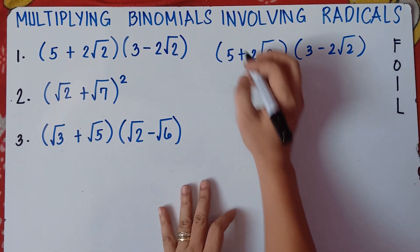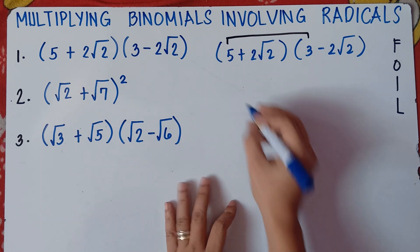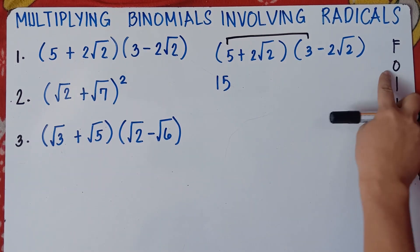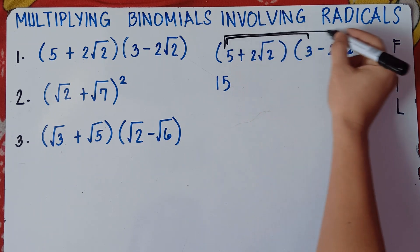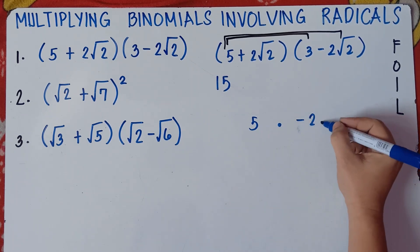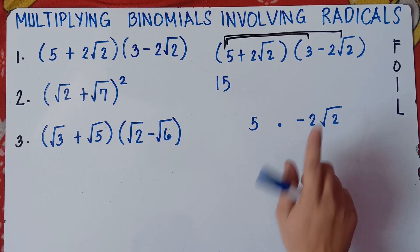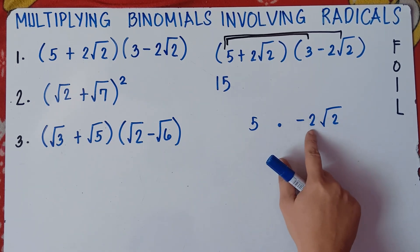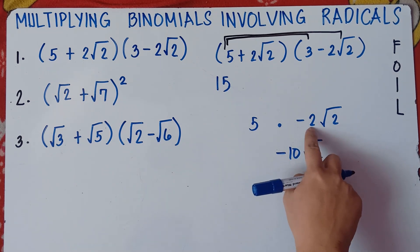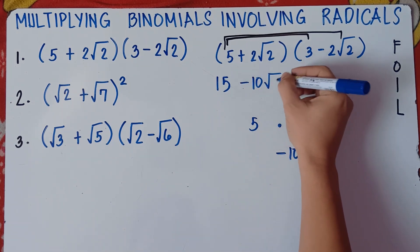Let's start multiplying. First: positive 5 times positive 3, that's positive 15. Next, Outer: positive 5 times negative 2 square root of 2. Do not multiply 5 and the radical inside — it should be 5 and the number outside. So 5 times negative 2 is negative 10. Simply copy square root of 2. So we get negative 10 square root of 2.